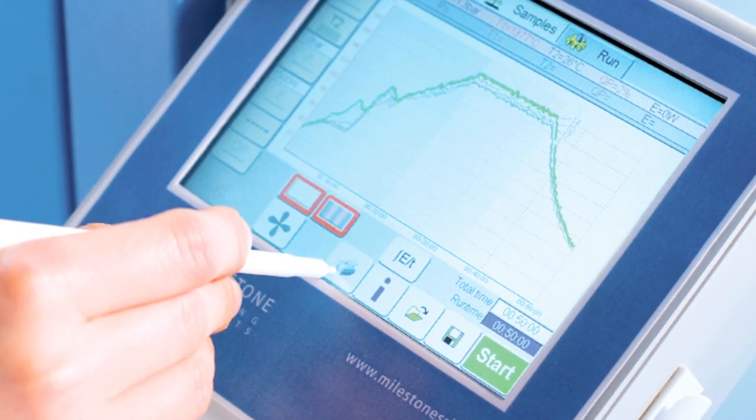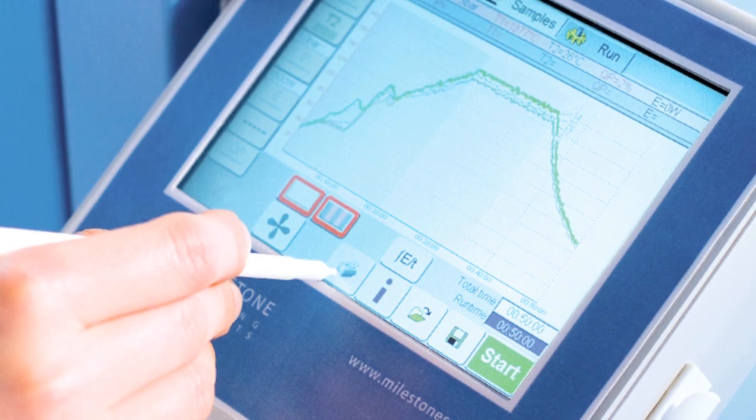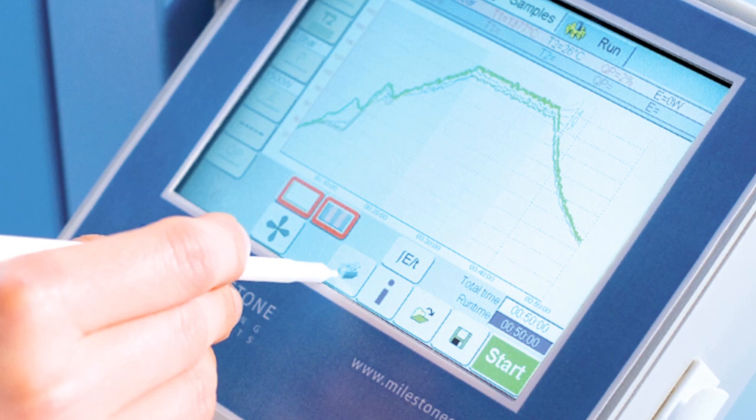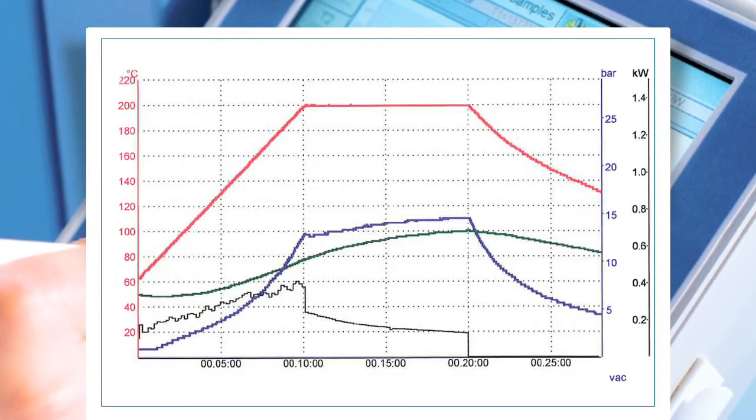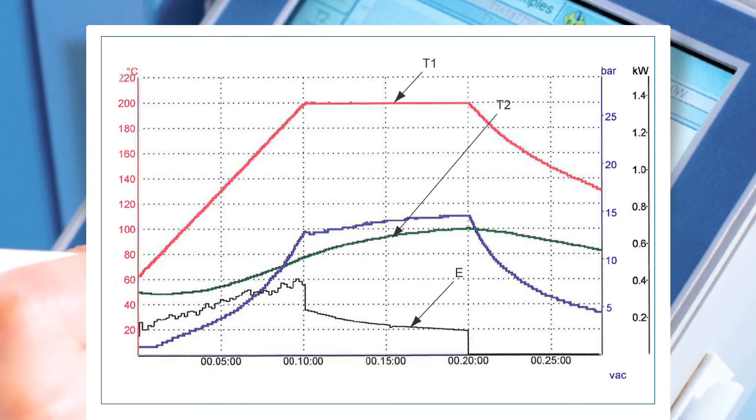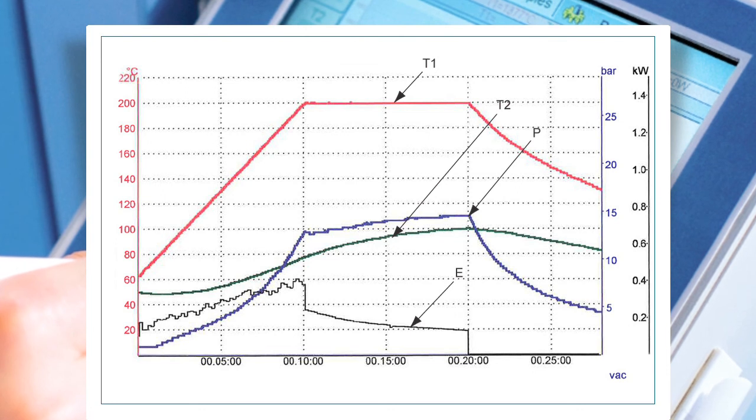Another great feature of EasyControl is that there is no need to select different power levels as the EasyControl's PID controller monitors and records temperature 20 times per second. The system will automatically adjust microwave power output to follow the desired temperature program regardless of rotor or number of vessels being used.